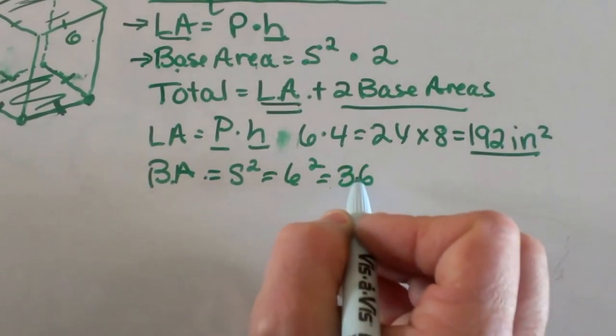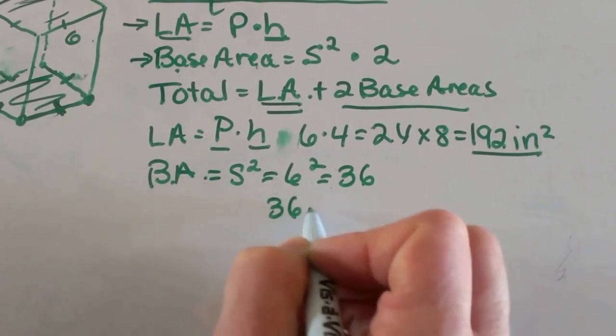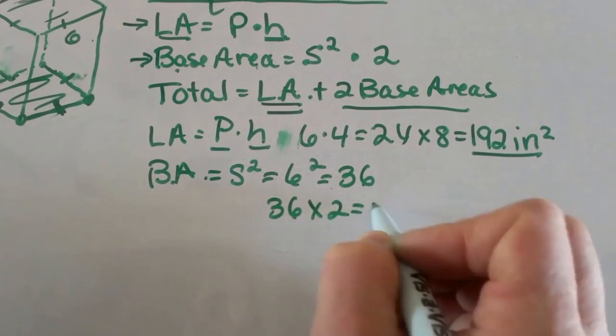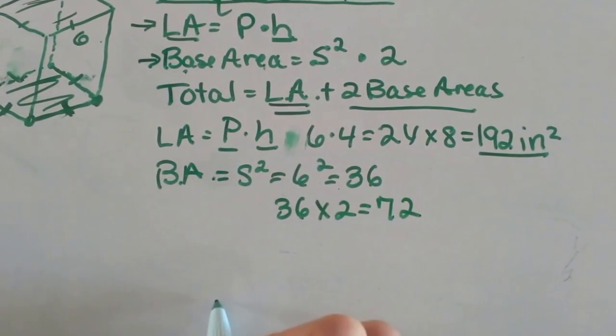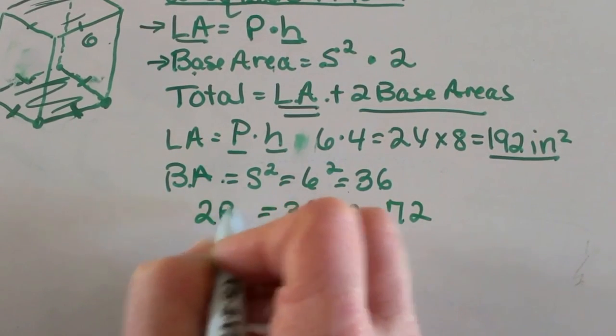Now don't forget we have two bases. So I've got to take that 36 and double it to 72 to account for both of the bases. So that accounts for two base areas.